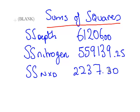In this presentation we are going to continue on with our two-way ANOVA with replicates. What we are looking at here is a recap of what we computed in the first part. We computed three sums of squares: the sums of squares from depth, the sums of squares from nitrogen, and the sums of squares of the interaction effect.